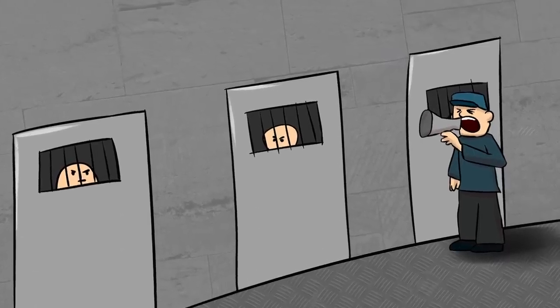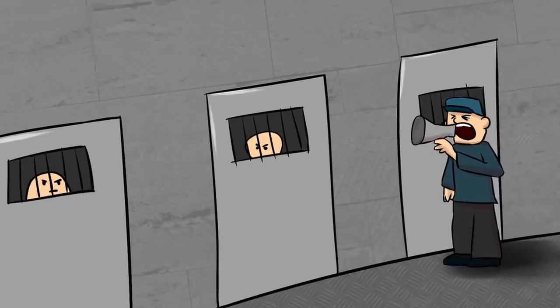Each prisoner's name only appears once and is in only one of the 100 boxes. The warden gives the prisoners a last chance and decides to play a game. If the prisoners win, they will be set free. But if they lose, they will all be executed immediately.